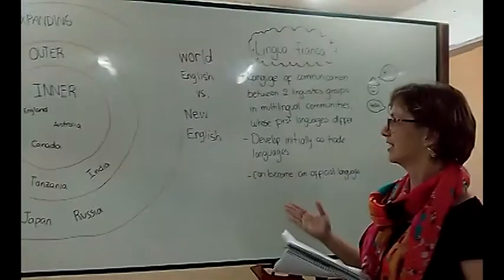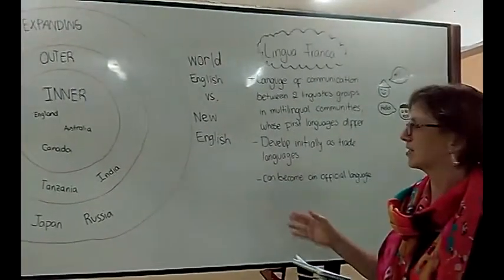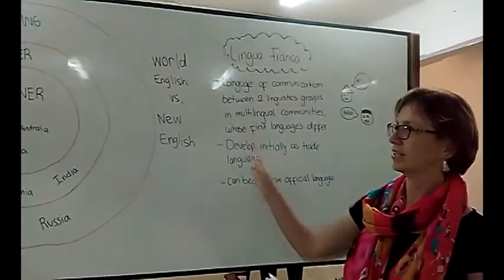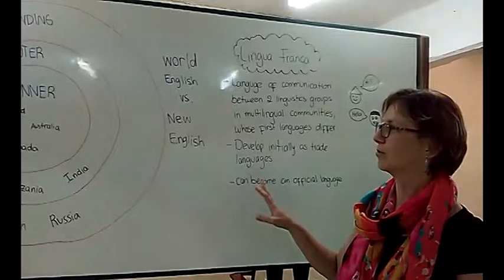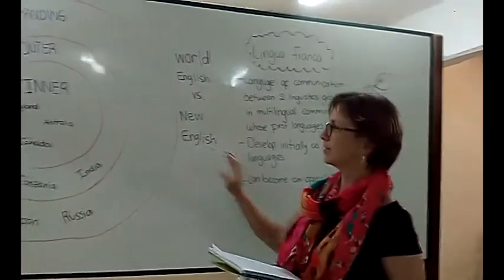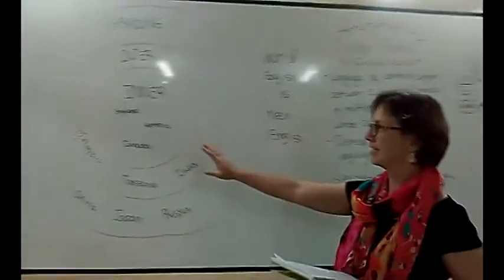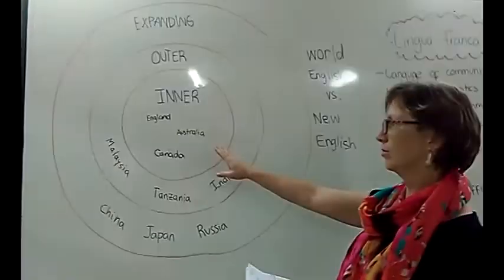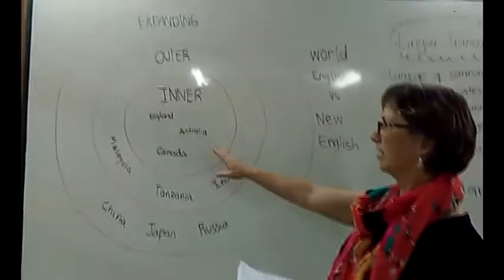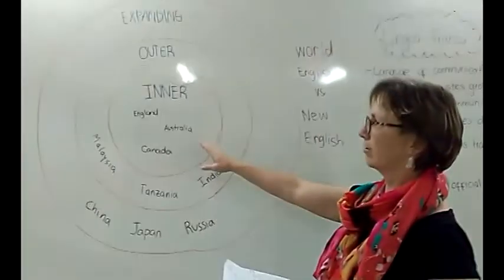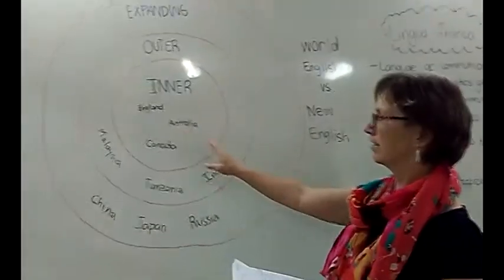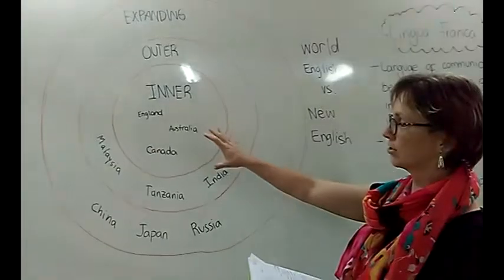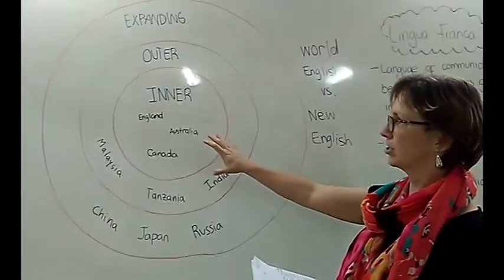We also have World English versus New English. World English means English all over the world, but mainly in countries that have English as their first or only native language, like England, Australia, and Canada. That's the inner circle of English.